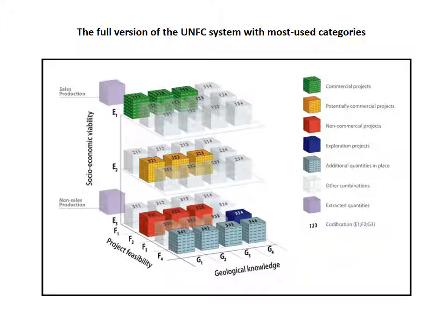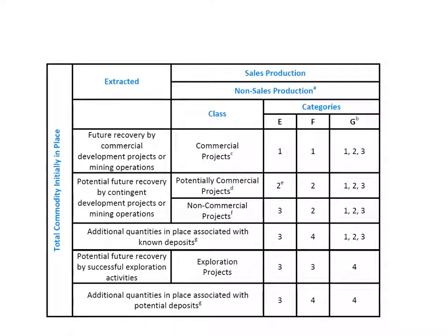This is the full version of the United Nations Resource Classification, or UNFC system, with the most used categories represented as colored cubes. Although the system is very comprehensive with the potential to cover any possible case of development, not all possible categories are used in general. The most common categories are shown as colored cubes, ranging from exploration to commercial.